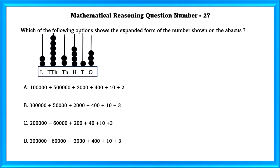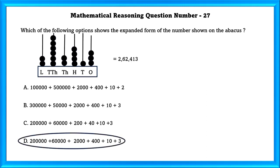Mathematical reasoning question number 27. Which of the following options shows the expanded form of the number shown on the abacus? Option D shows the expanded form.